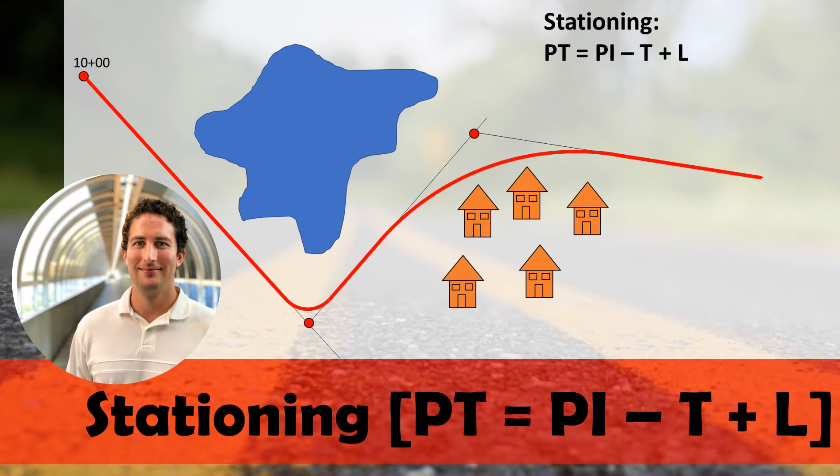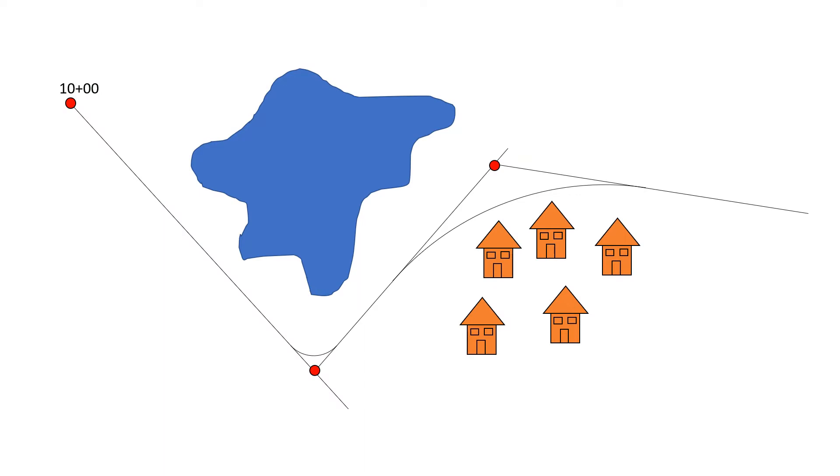Stationing for horizontal curves is actually one of the most common mistakes in a horizontal curve or horizontal alignment problem. The key thing we need to focus on for stationing for a horizontal curve is that the stationing needs to happen along the curve.